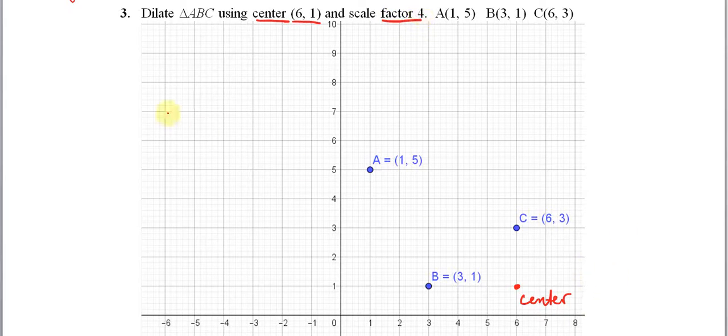Before I do anything else, I'm going to figure out what is the distance between each of these points and the center. This center here is at (6,1) and some of the distances are easier to find than others. From the center to C, you're going from (6,1) to (6,3), so that's two units. From the center to B, we're going from (6,1) to (3,1), so that's three units.